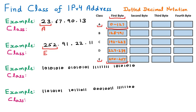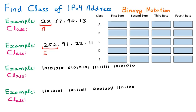The third and fourth examples are in binary notation — we can see the numbers are 0, 1, 0, 1, so this is not dotted decimal. For binary notation, we use a different table. In this table, Class A starts with 0, Class B with 1 0, Class C with 1 1 0, Class D with 1 1 1 0, and Class E with 1 1 1 1 1. Now we have to find out where our IP addresses belong.